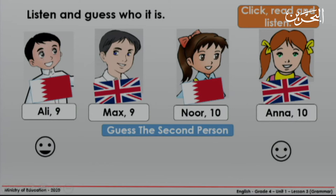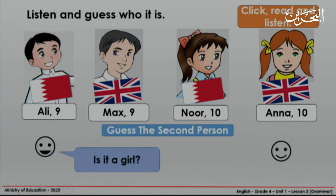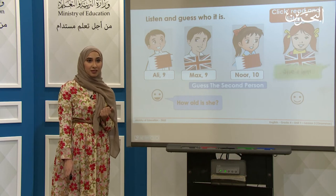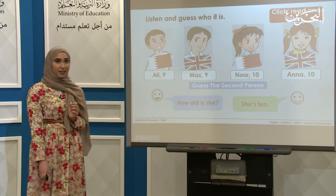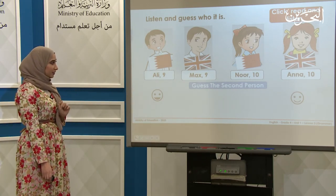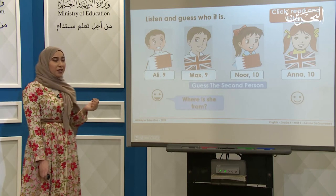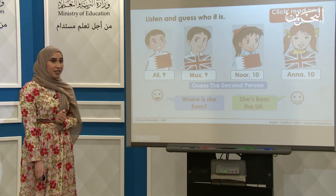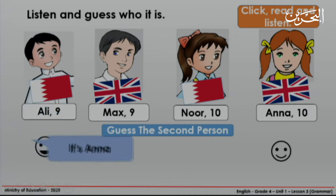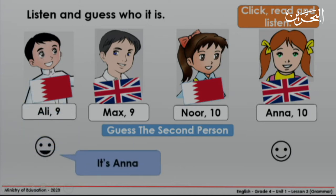Now I want you to guess the second person. Is it a girl? Yes, it is. How old is she? She's 10. Can you guess now? No, we have two girls. Let's see the next question. Where is she from? She's from the UK. Now you can guess, right? Excellent! It's Anna. Did you guess Anna? Thank you.